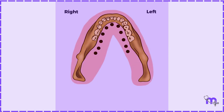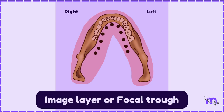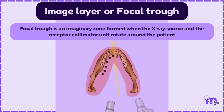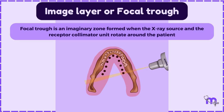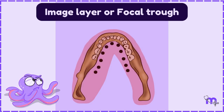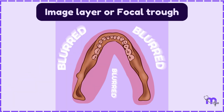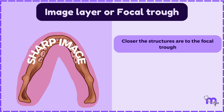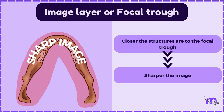The area through which the X-rays pass to create the required image is called the image layer or the focal trough. The focal trough is an imaginary zone formed when the X-ray source and the receptor-collimator unit rotate around the patient. All the structures within the focal trough are clearly obtained. Therefore, the closer the structures are to the focal trough, the sharper they appear.